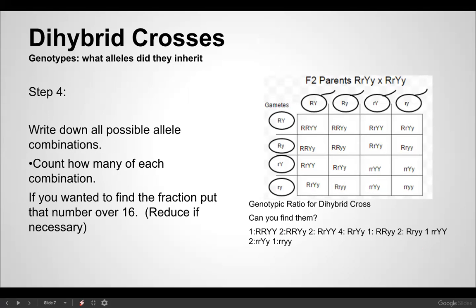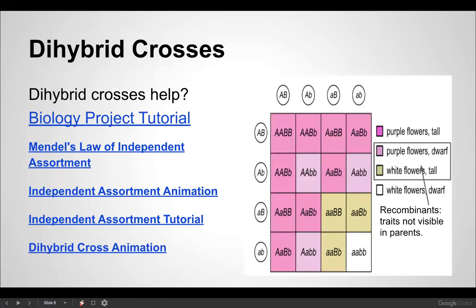Step four: write down all the possible allele combinations. If you write down all the genotypes, there are quite a few — not just three. Count how many you have of each, and if you want to find the fraction, put them over 16. It usually comes out to a nine to three to three to one ratio. There are some more examples for help if you need it.